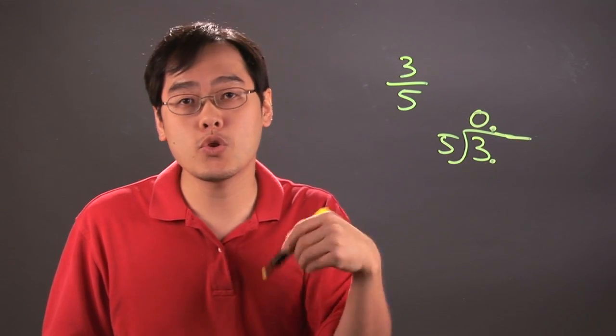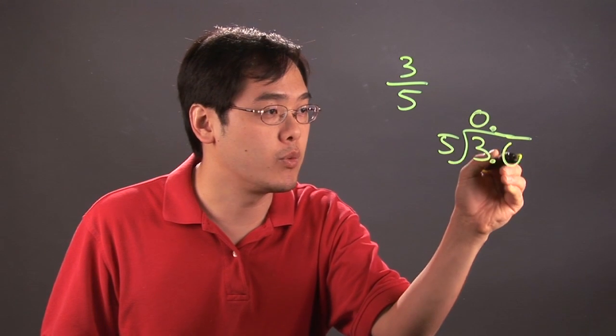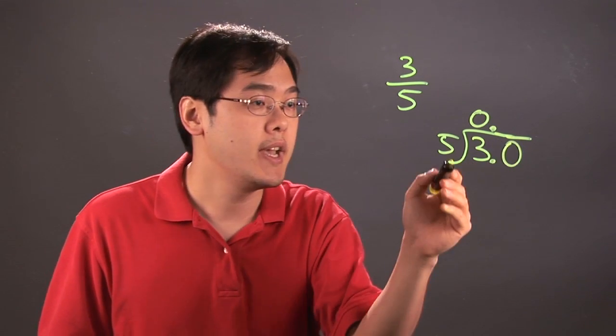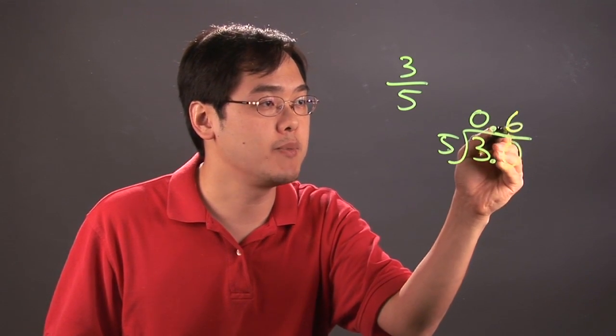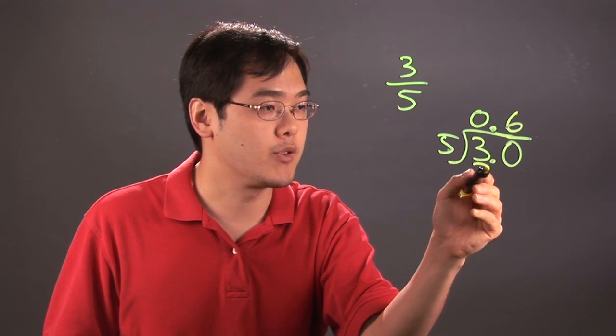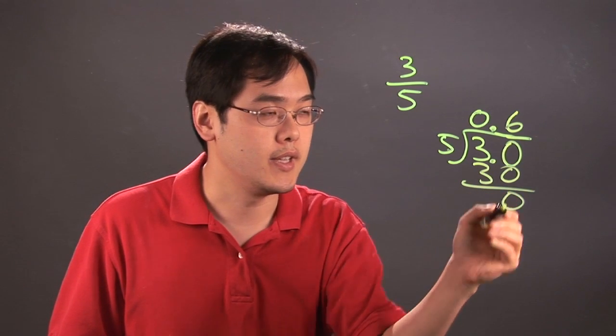What you want to start doing is putting zeros afterwards so you can start the division. 5 goes into 30, and it's going to be 6 times, and 6 times 5 is 30, with a 0 remainder.